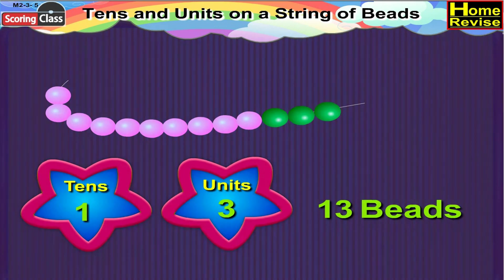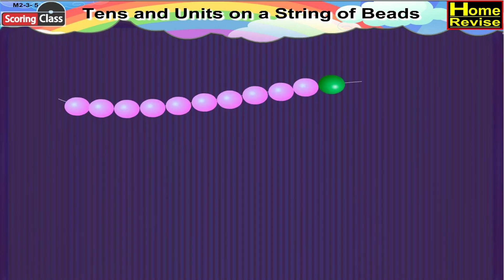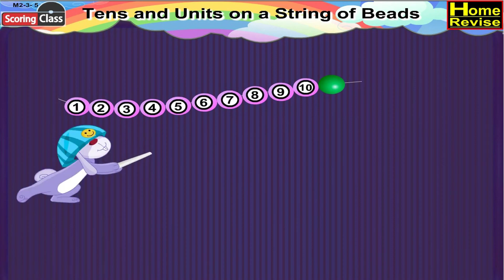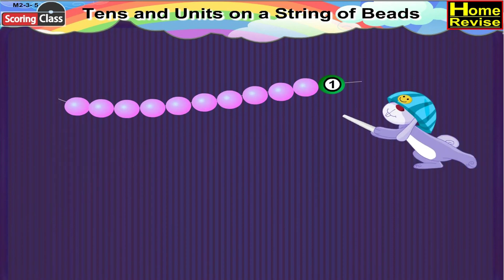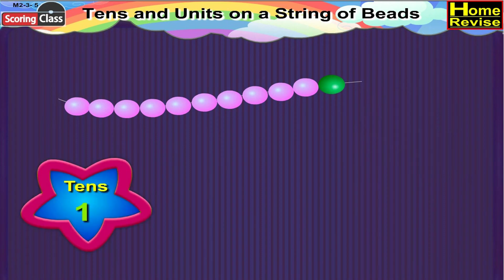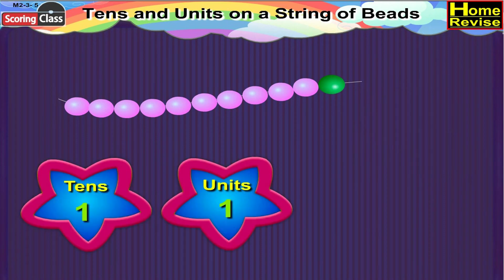In the next string, beside ten pink beads, one bead is there in green, which means it is one ten, one unit, or eleven.